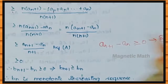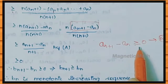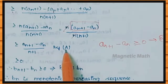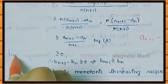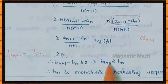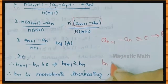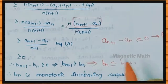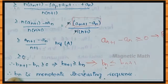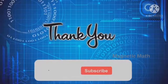Since bn plus 1 minus bn ≥ 0, that means bn ≤ bn plus 1, so bn is a monotonic increasing sequence. Therefore, if An is an increasing sequence, then bn = (A1 + A2 + ... + An)/n is also a monotonic increasing sequence. Thank you very much.